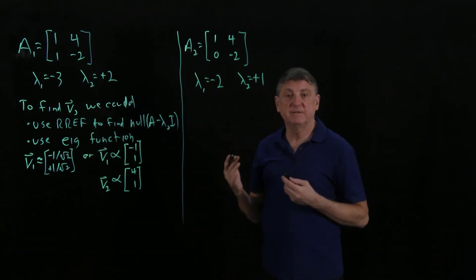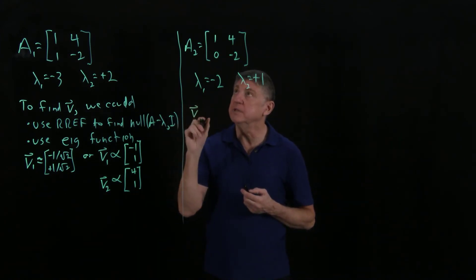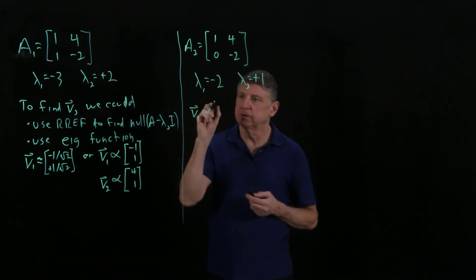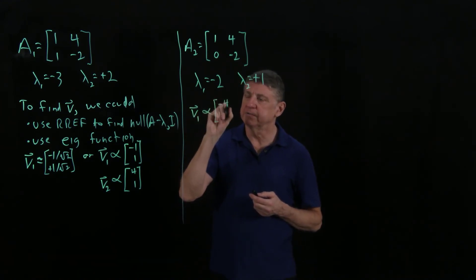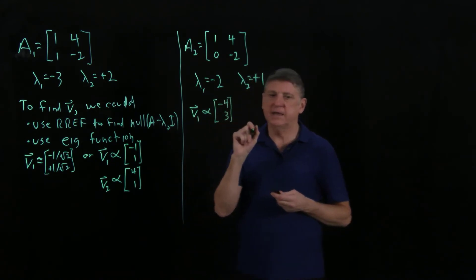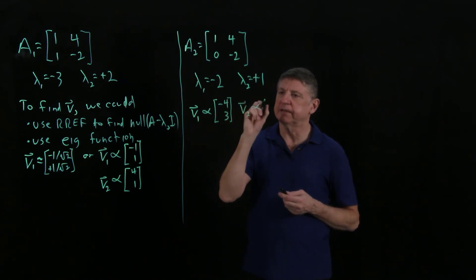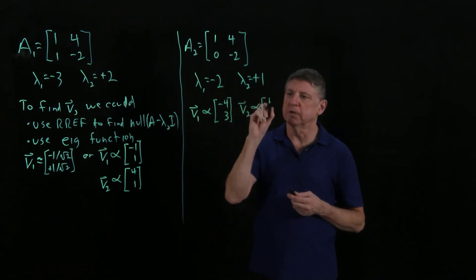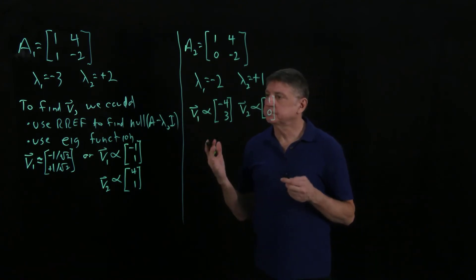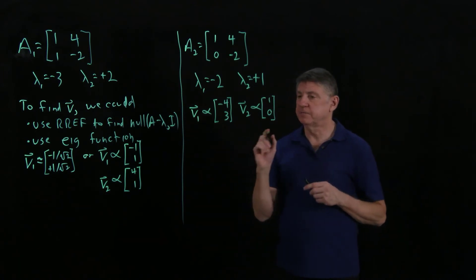so the eigenvectors are a basis, and the eigenvector basis for this matrix is V1 is proportional to minus 4, 3, and V2 is any vector that is a scalar multiple of 1, 0. So that's relatively straightforward.